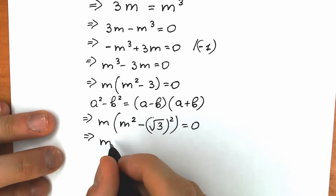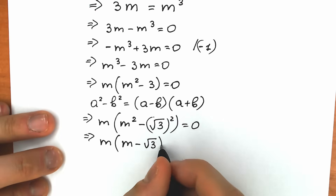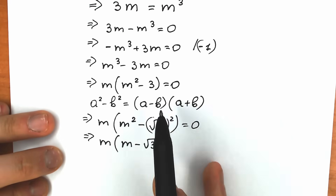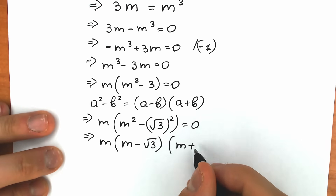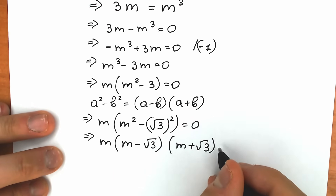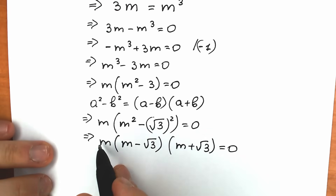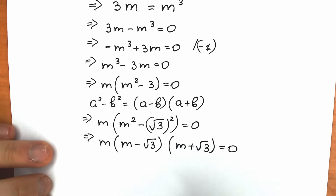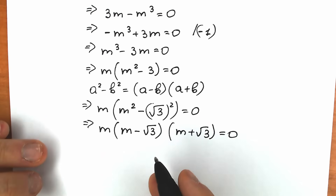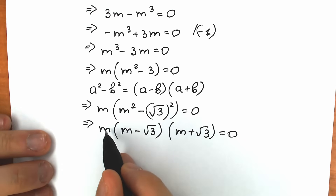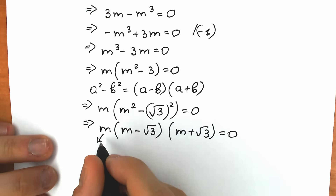As a result, we have m times (m minus √3) times (m plus √3) equal to zero. We have a product of three factors. A product equals zero when any one factor equals zero.